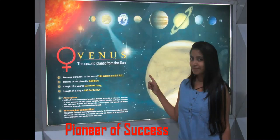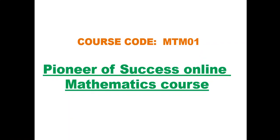Today we are here with a new course on mathematics. The course name is Pioneer of Success Online Mathematical Course. Now onward we will be giving a code name to every video. This video bears the code name MTM01, that means MTM stands for Mathematics and 01 means the first course.